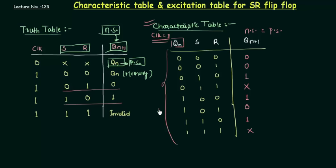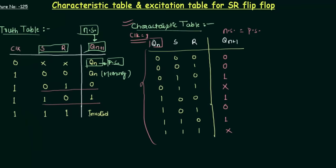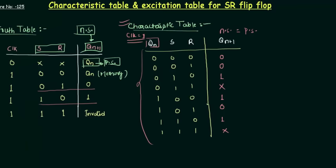So you have just evaluated your characteristic table — a very simple one if you know the truth table. You can see that until and unless you know the values of your next state depending upon S and R, you cannot evaluate your characteristic table. So first remember the truth table. Now we will move to our next important table: the excitation table.